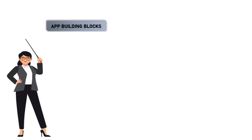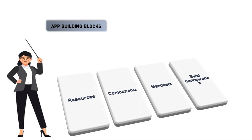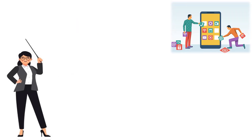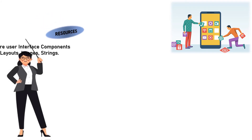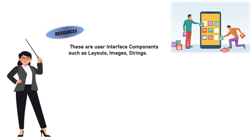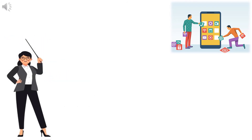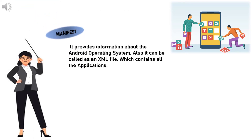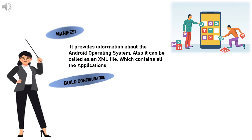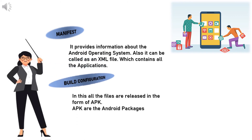App building blocks — there are four components to build an Android app: 1. Resources — these are user interface components such as layouts, images, and strings. 2. Components — these contain attributes, services, and helper classes. 3. Manifests — it provides information about the Android operating system; it is also called an XML file which contains all the applications. 4. Build configuration — all the files are released in the form of APK, which stands for Android packages.